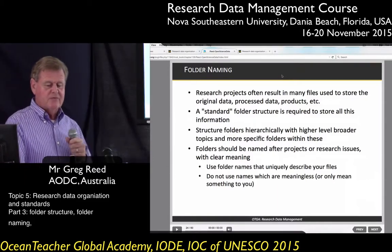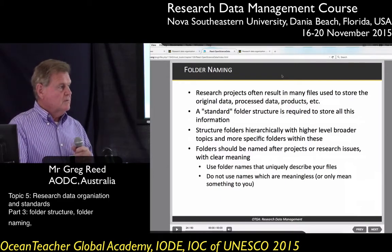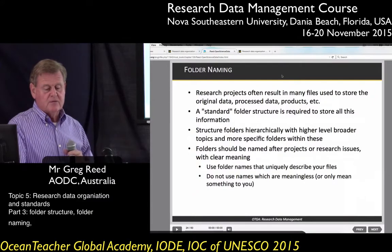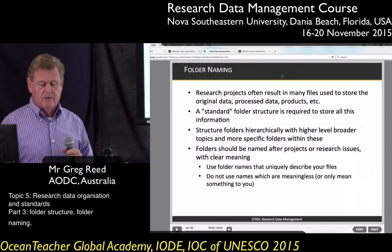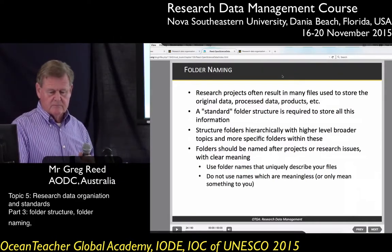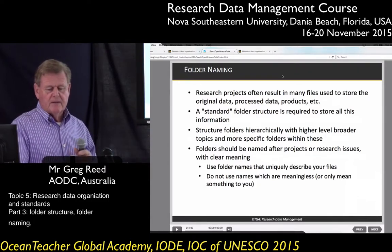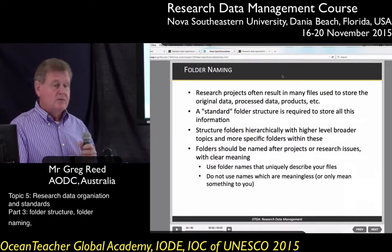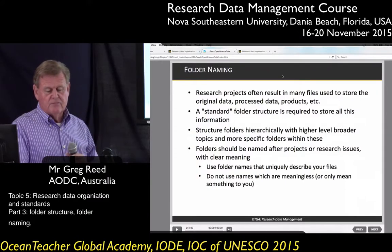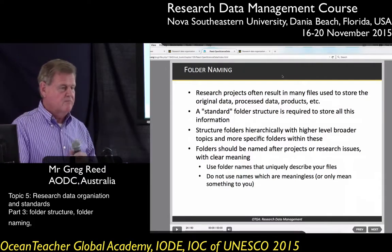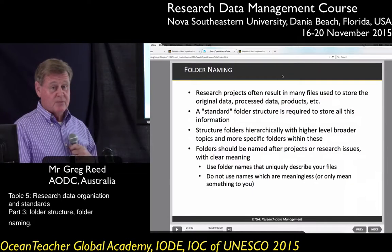It's good to come up with a standard folder structure to store all of your research data and stick with that standard structure. The structure should be hierarchical with high-level broad topics and more specific folders underneath these. You can name the folder after a project or a research issue, and you need to use folder names that uniquely describe your files. Don't use names that are meaningless or only have meaning to you — don't call your files 'Greg' or 'Bill' because you know what it means but nobody else does.